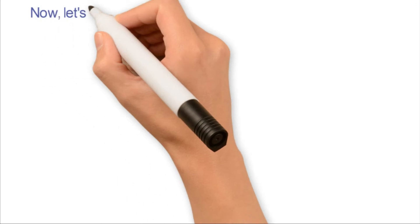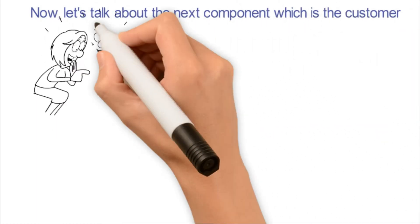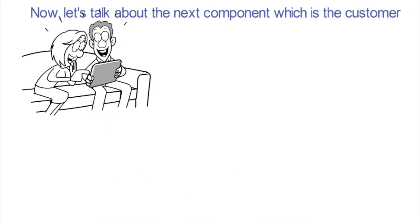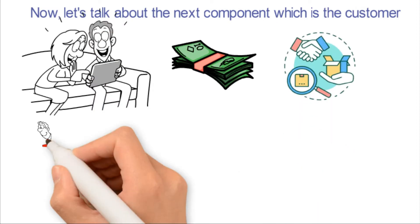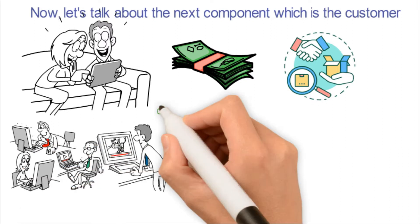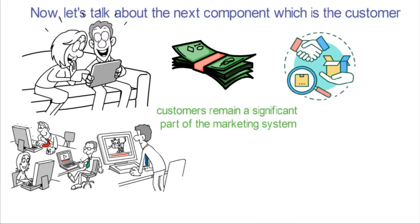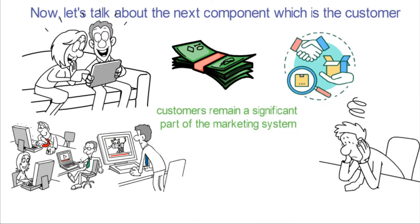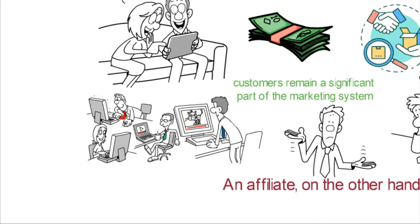Now let's talk about the next component, which is the customer. These are the people who need your products and services — they pay for products or services so far as it will solve their problems. The purpose of marketing is to make sales, and therefore customers remain a significant part of the marketing system. Without the buyers, the producer or merchant will create no product, and an affiliate will have no role to play.